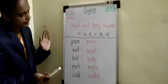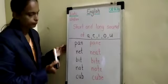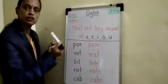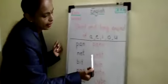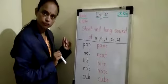Okay, now next word. N, E, T, NET. NET is a short sound of E. N, E, A, T, NEAT. NEAT is a long sound of E.